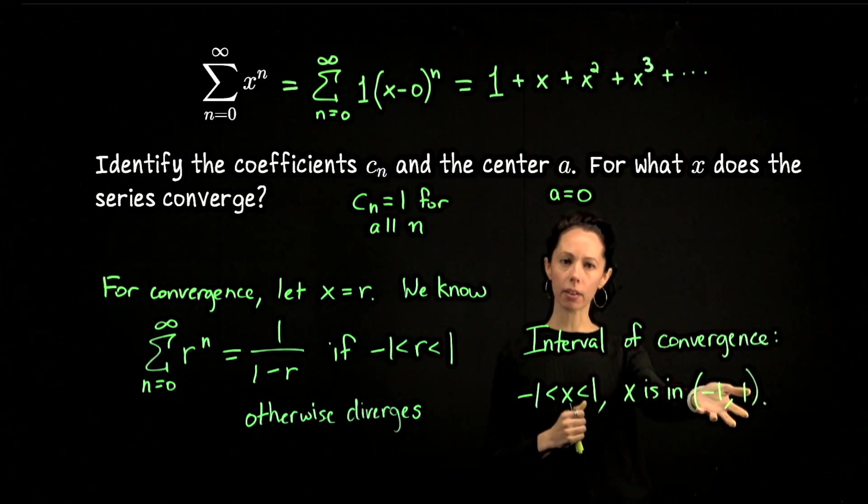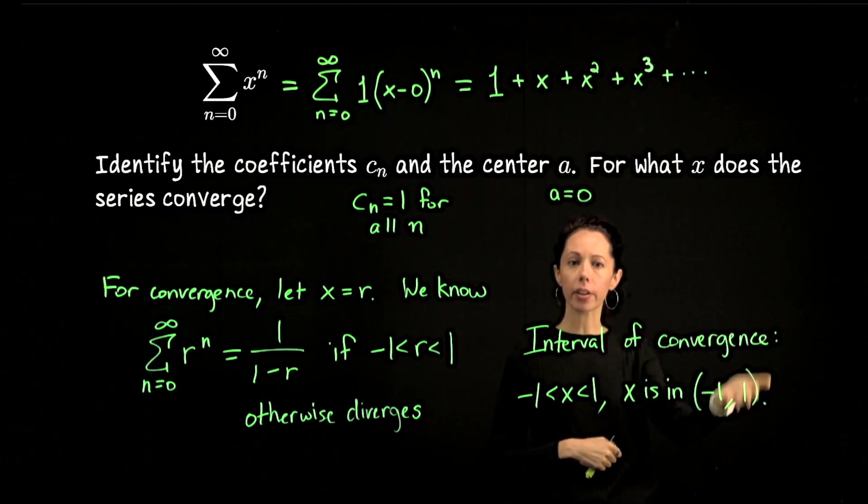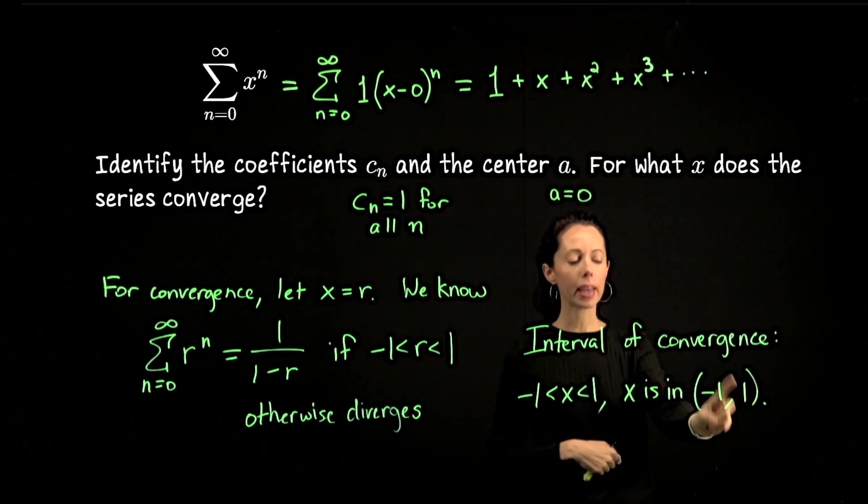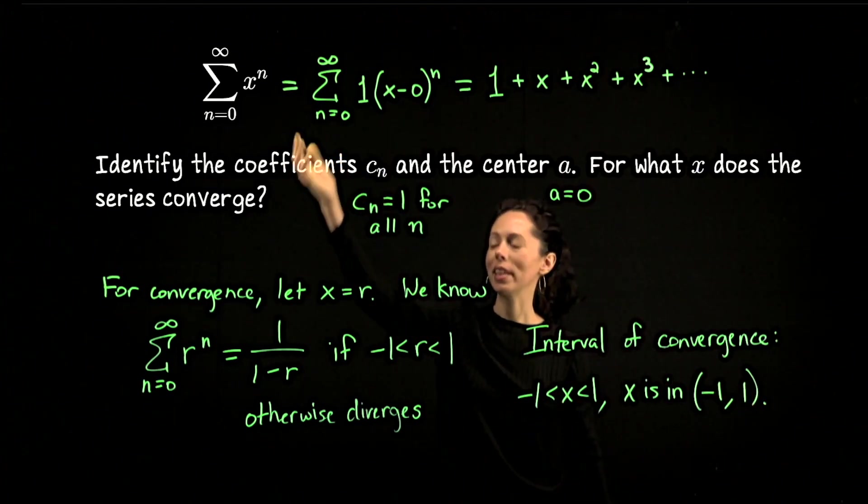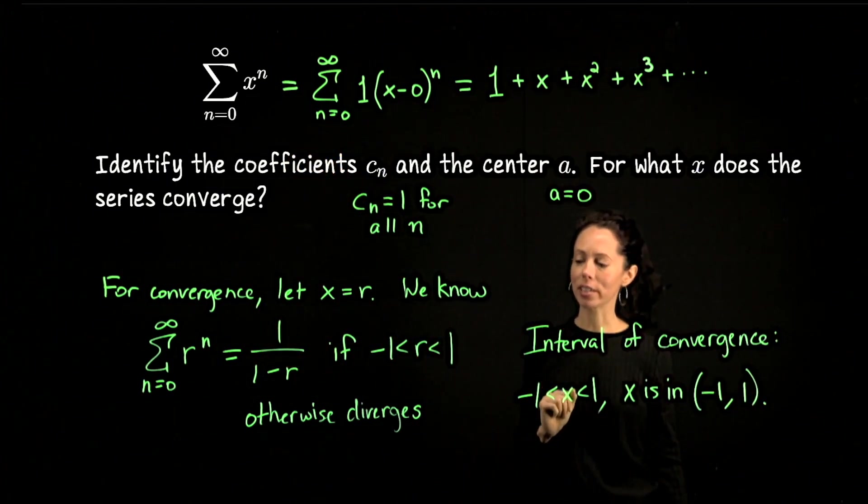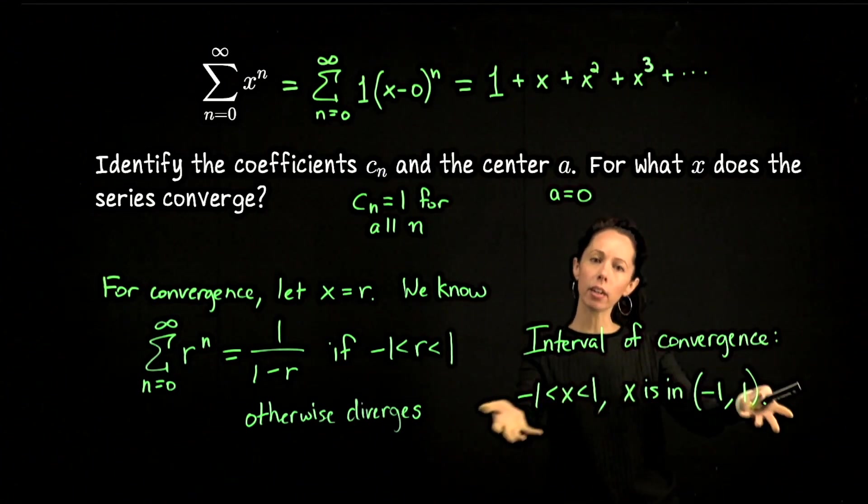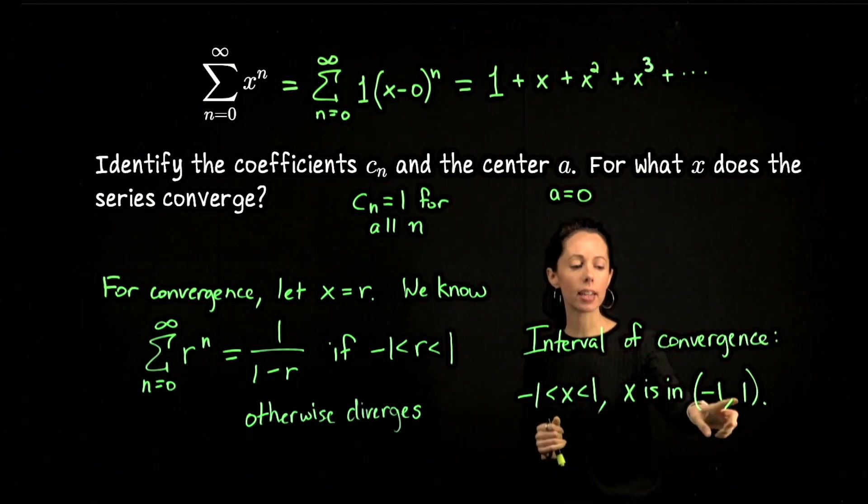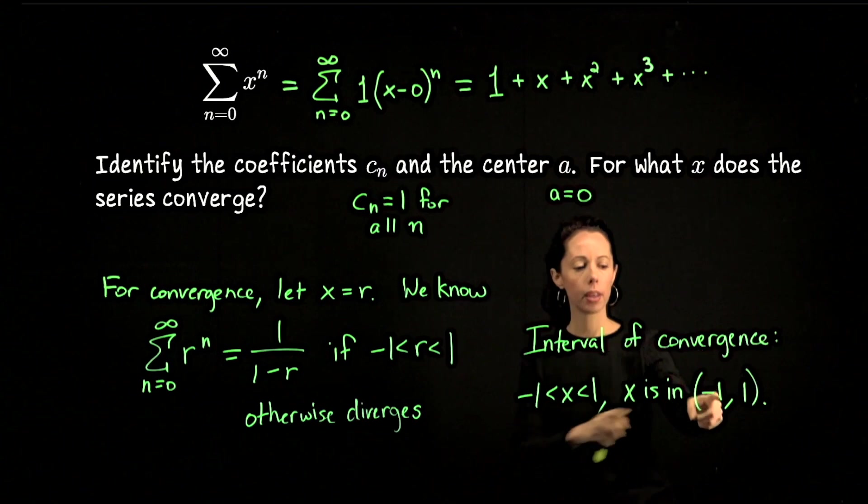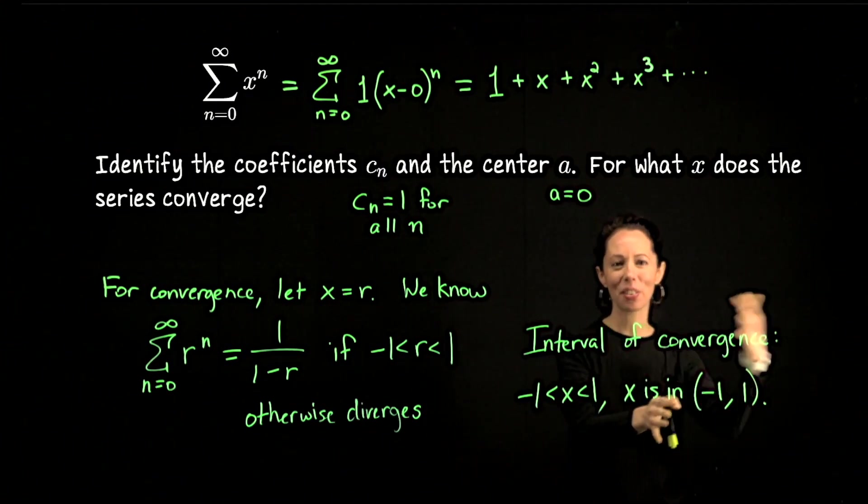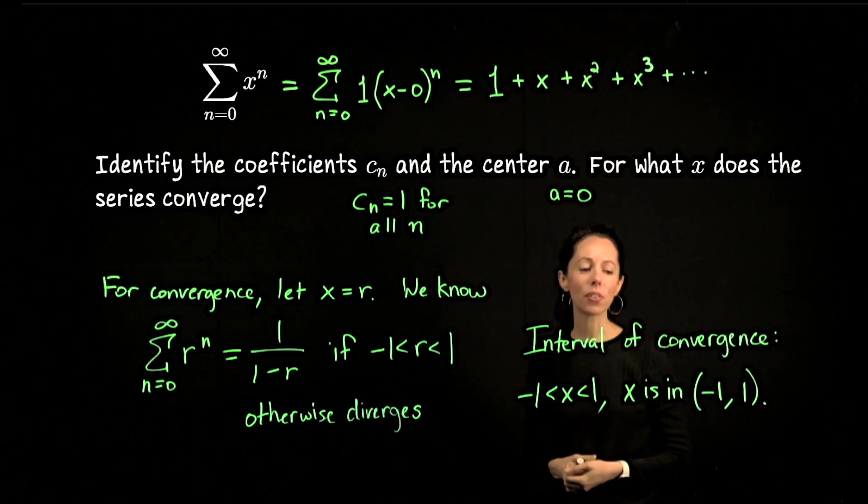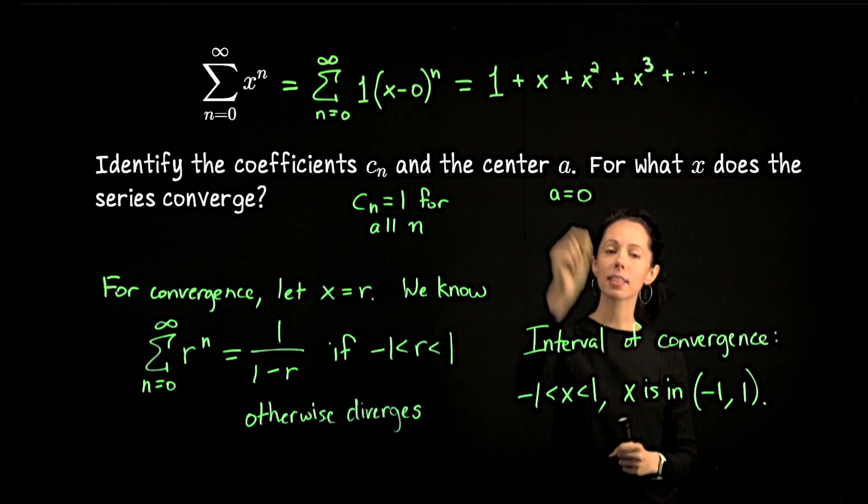One way to say this is x is between negative 1 and 1, or x is in the open interval from negative 1 to 1. Only in this interval would this power series converge. If I pick any number outside of this interval, like 1.5, 1.5 to the n we know is not going to converge, it diverges. This is the interval of convergence, and notice that it is symmetric about the number 0. I go from negative 1 to 0 to 1. It's 1 unit to the left of 0 and 1 unit to the right of 0. This is an interval whose center is this number 0.